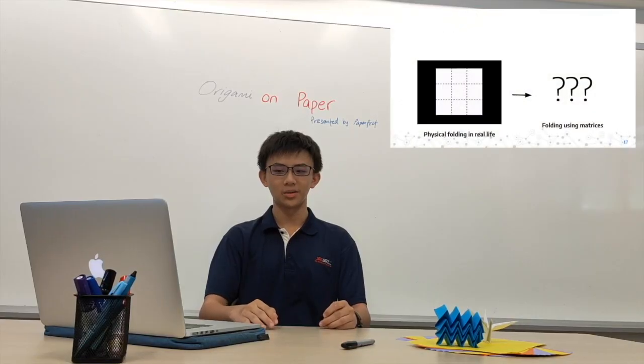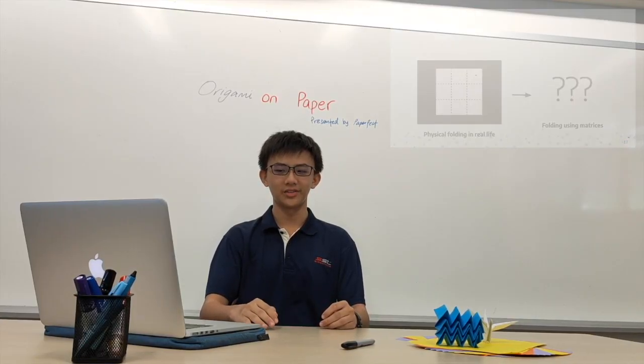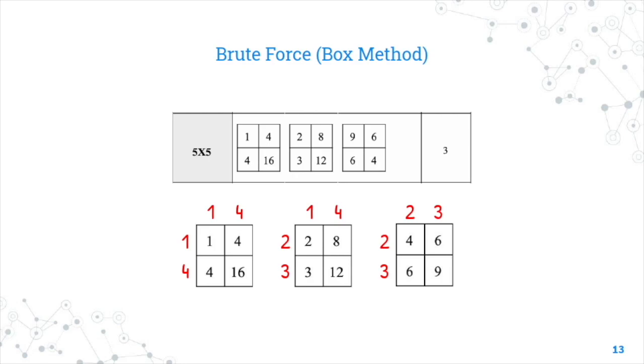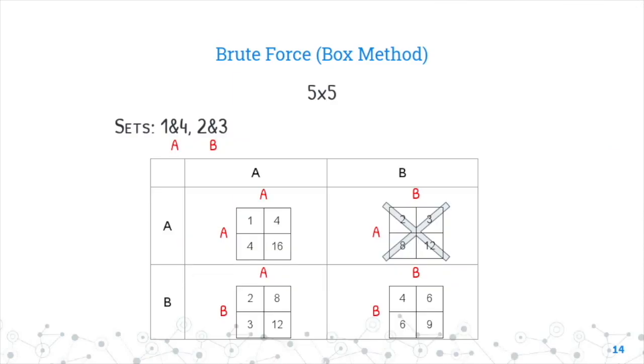While looking at the unique combinations, we found a pattern and developed a theoretical way to calculate the combination using the box method. We also found out that the numbers used on each side of the box method added up to the dimension number of the paper, which we call a set. For example, in a 5×5 square, there is the set of 1 and 4, and another set of 2 and 3. Using the different sets, we are able to hypothesize the combinations that could be folded, which we could later prove to be true by using brute force and folding the actual paper.